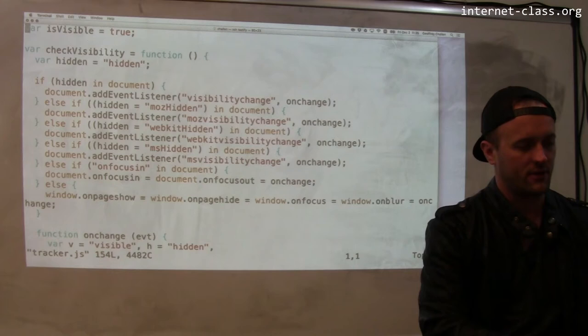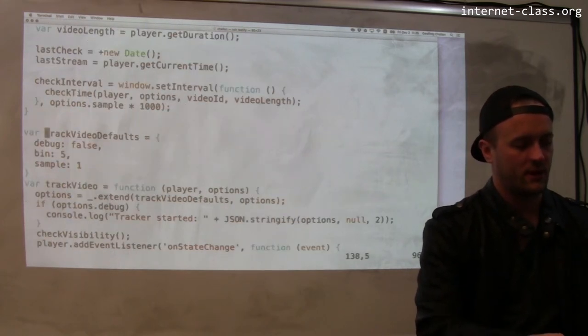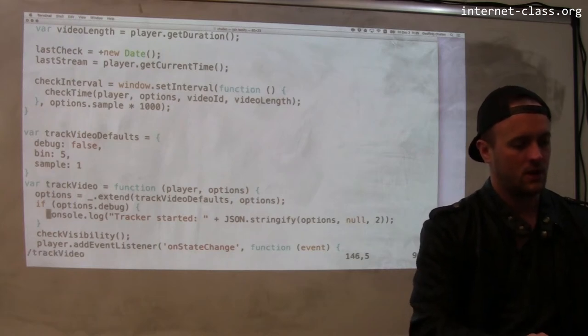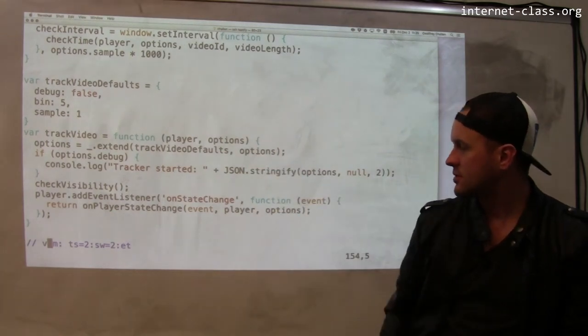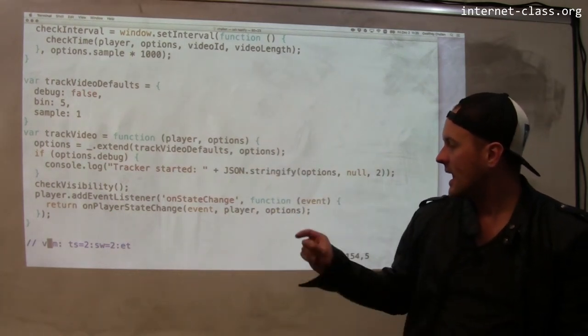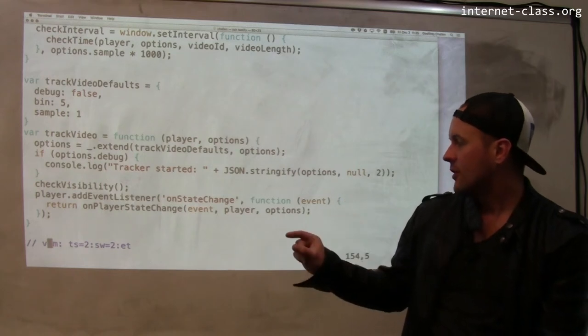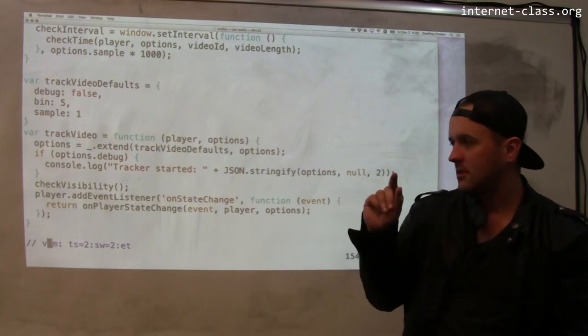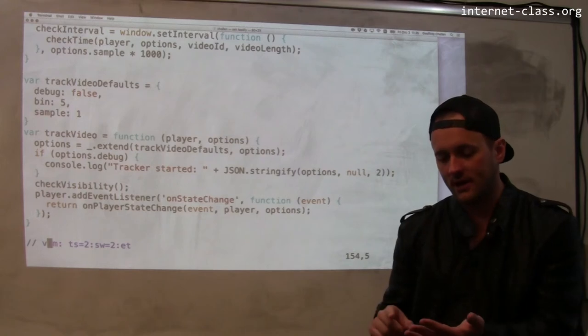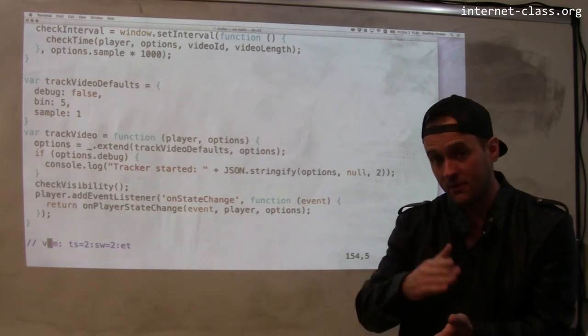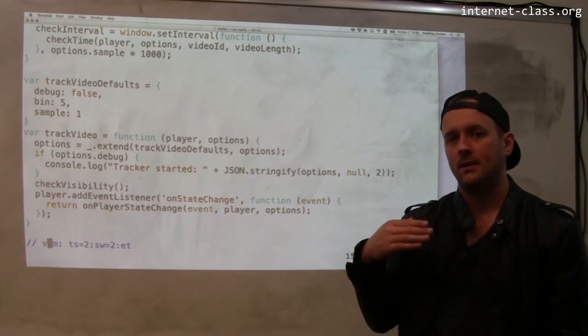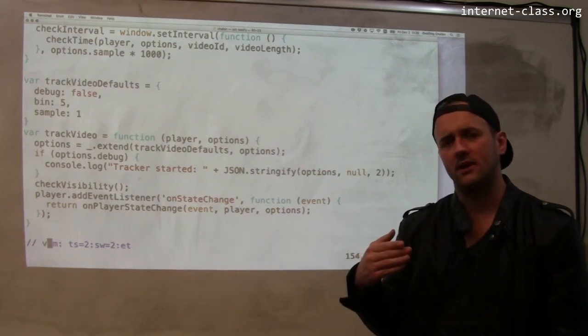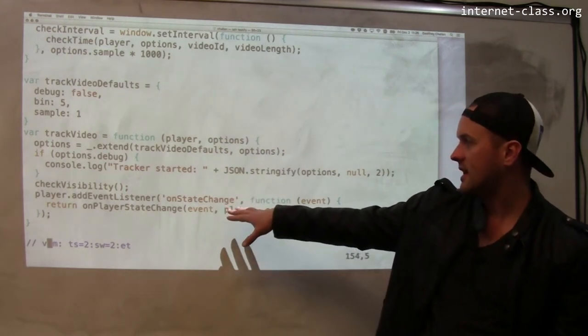That track video function is located in a different file here. This is all sort of mixed together when the page is loaded. And what the track video tool does is it adds, so this is interesting, it adds a listener for changes to the player state. So what it does is it tracks if you skip, that results in several changes to the player state. If you pause the video, if you do things like, actually mute doesn't generate any changes to the player state. But anyway, so this generates a listener to the player state.